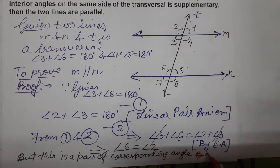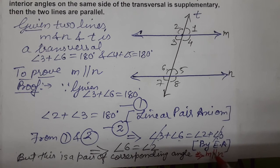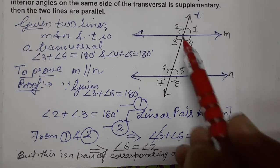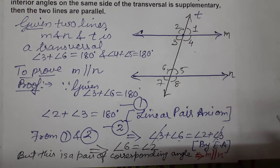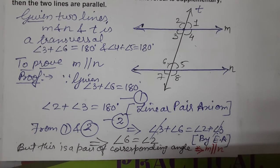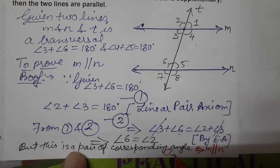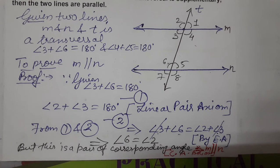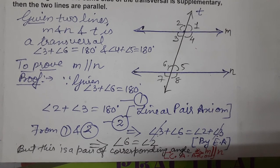So from this we get the result: M is parallel to N. And the reason is corresponding angle axiom. Because if two corresponding angles are equal, then the lines become parallel. So M is parallel to N by corresponding angle axiom. This completes this theorem. I hope you understood the theorem. Thank you so much for watching the video.